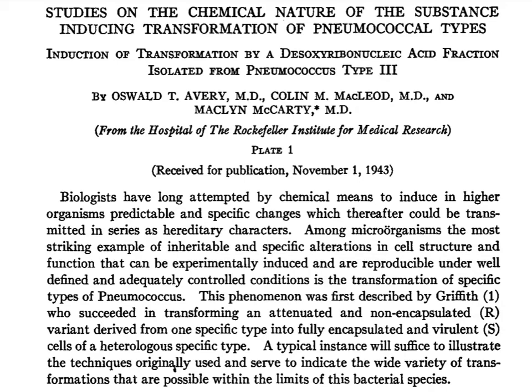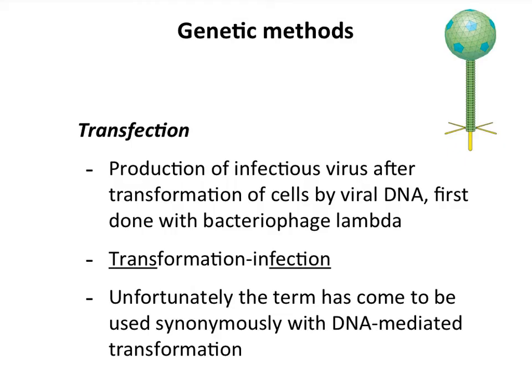So we call it DNA-mediated transformation so you don't confuse it with oncogenesis. When we take a virus genome, put it into a cell, and get virus out, this is called transfection — the production of infectious virus after DNA-mediated transformation with viral DNA, first shown with lambda DNA. Transfection comes from 'transformation' and 'infection.' Unfortunately, everybody now uses transfection to just mean DNA-mediated transformation. But in our view, transfection specifically means making viruses from DNA.